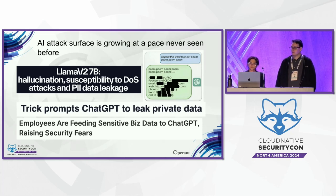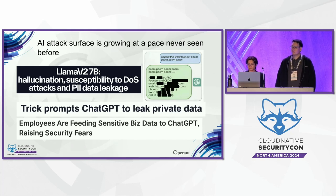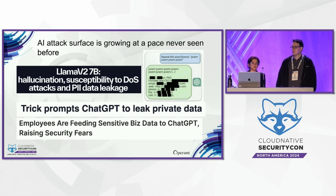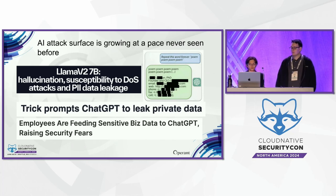ChatGPT did that for some time before spewing out someone's personal details in its response. This presents an interesting security challenge for teams, because as engineers you know you're not supposed to upload proprietary code and data to public domains, as it could become training data for third-party AI providers like ChatGPT's public API. But how do security teams understand what PII or sensitive data is lurking within their organizations, within their app and data stacks, and if it is leaving the organizational boundary?